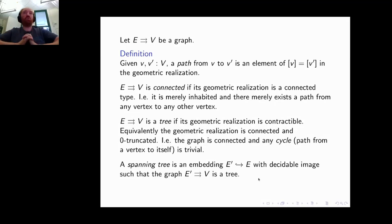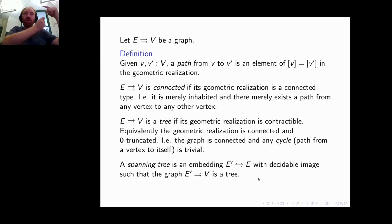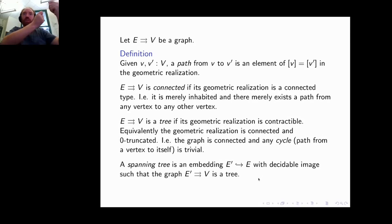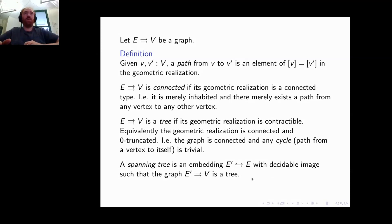Using trees, we can define spanning trees. A spanning tree is a subgraph with the same set of vertices but a subset of edges E' such that the resulting subgraph is a tree. For technical reasons I want this subset to be decidable — given an element of E, you can decide if it's in E' or not. The important point is that the subset of edges forms a tree when we use the same set of vertices.